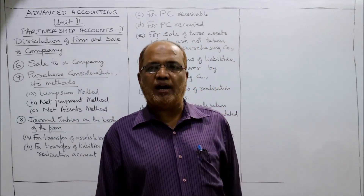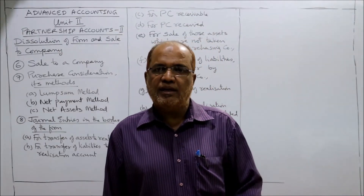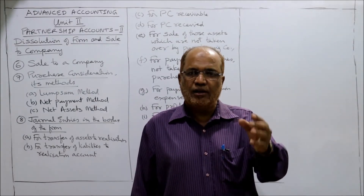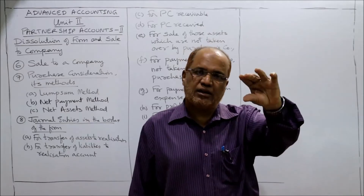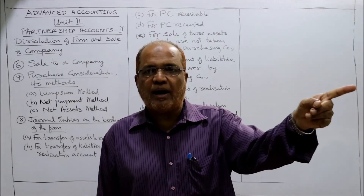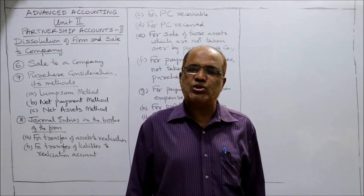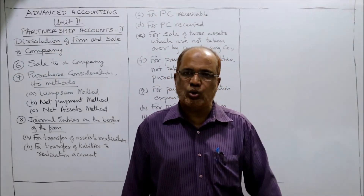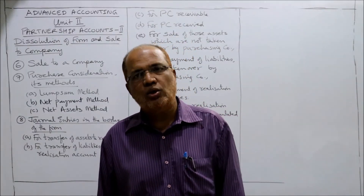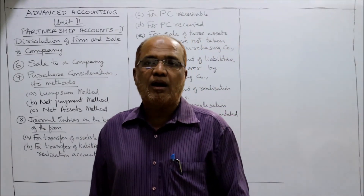For settlement of partners' accounts: Partners' Capital Account debit to Cash (if cash is to be paid); Partners' Capital Account debit to Shares in Purchasing Company; Partners' Capital Account debit to Debentures in Purchasing Company. By passing this entry, all accounts of the firm get closed — partners' accounts, cash account, shares, debentures — all accounts are closed.